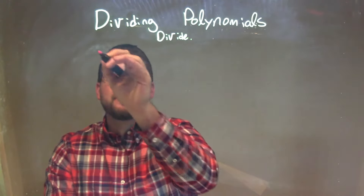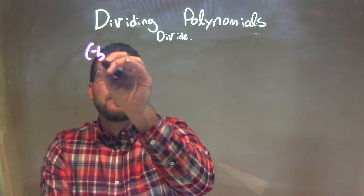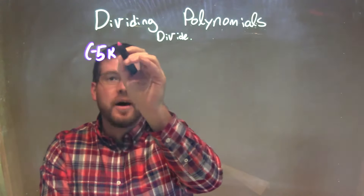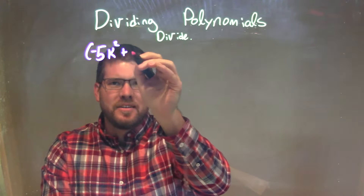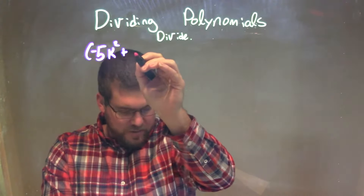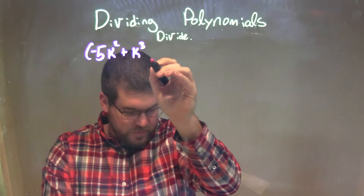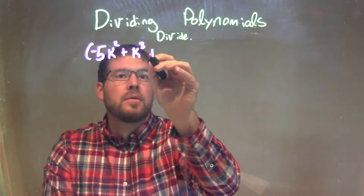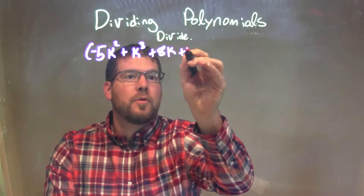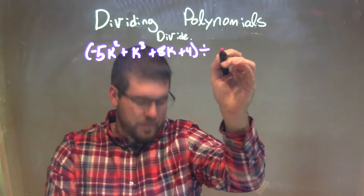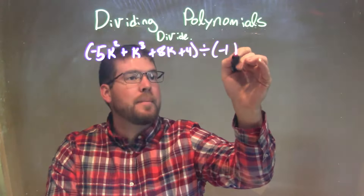So if I was given this problem: minus 5k squared plus k to the third plus 8k plus 4, divided by minus 1 plus k.